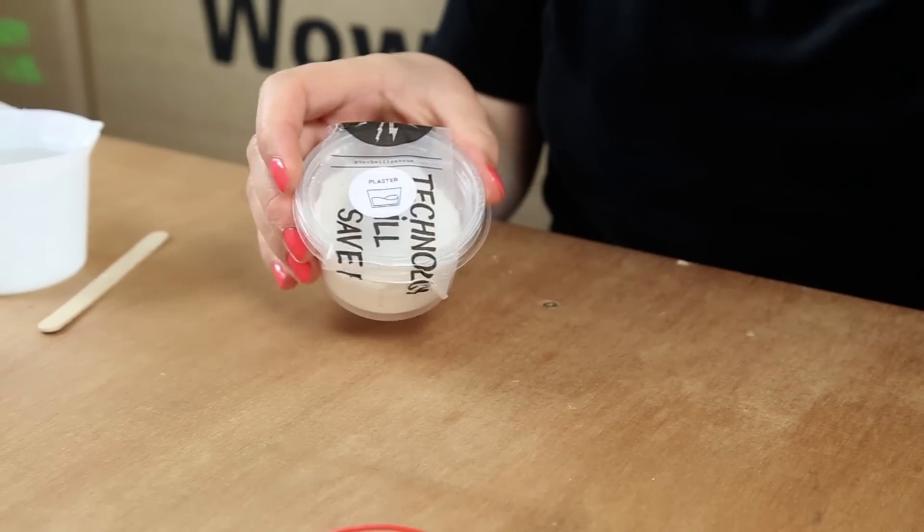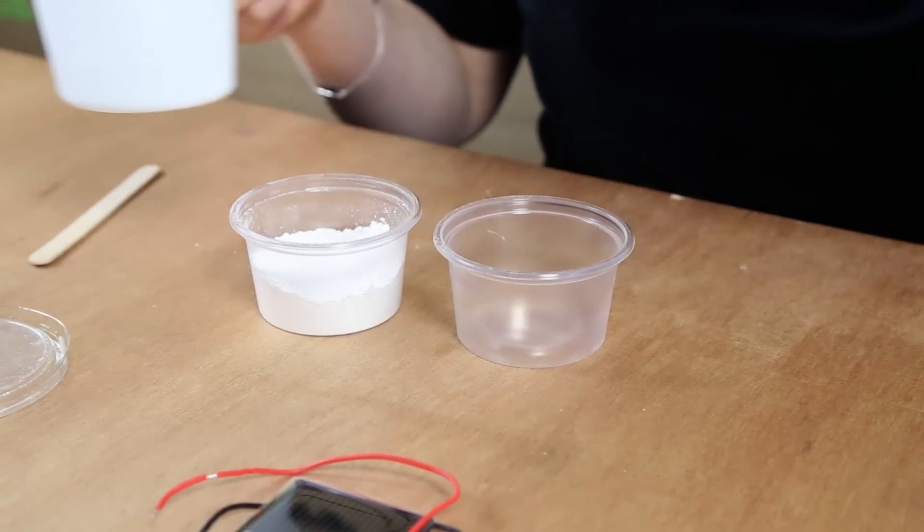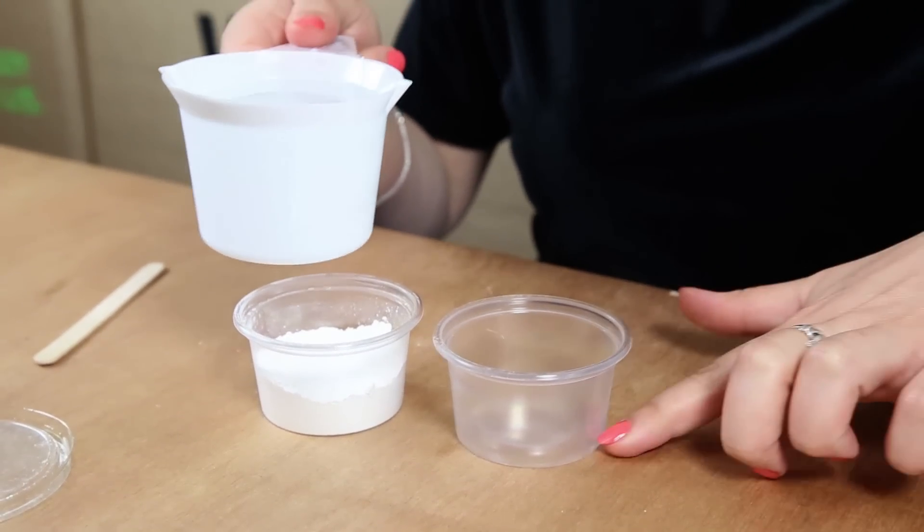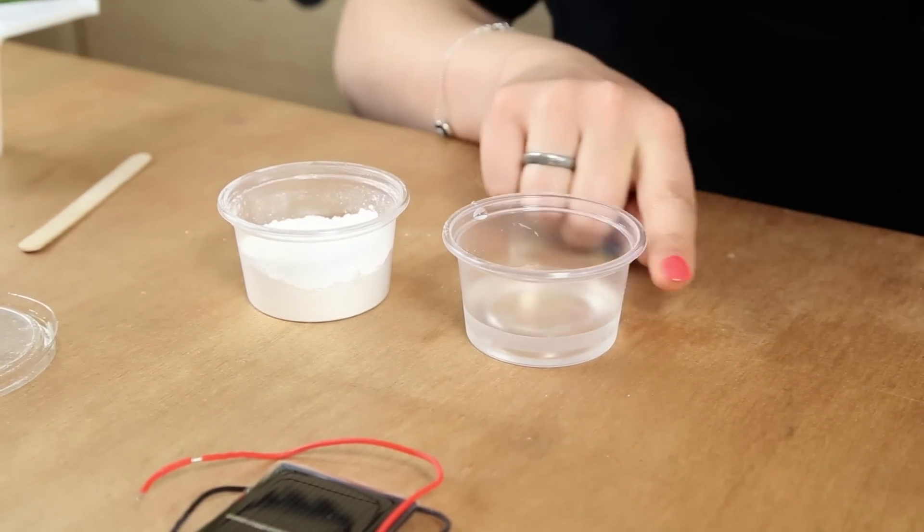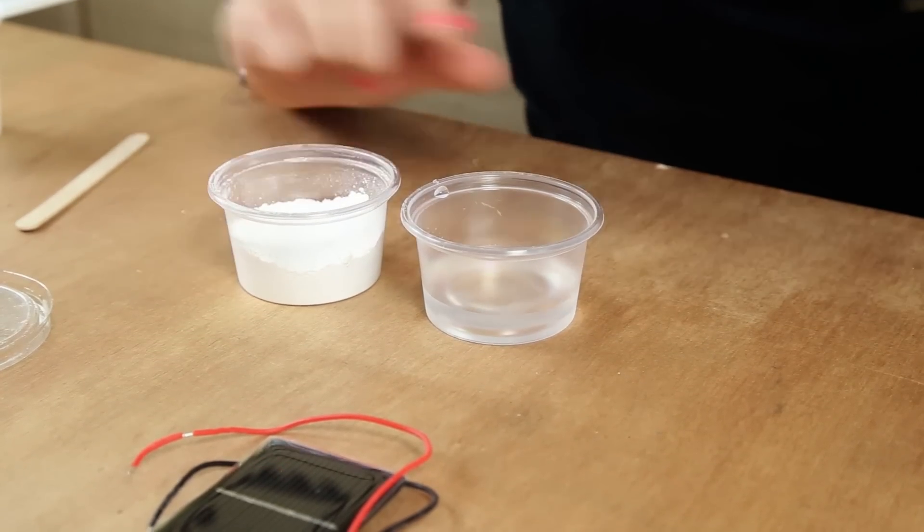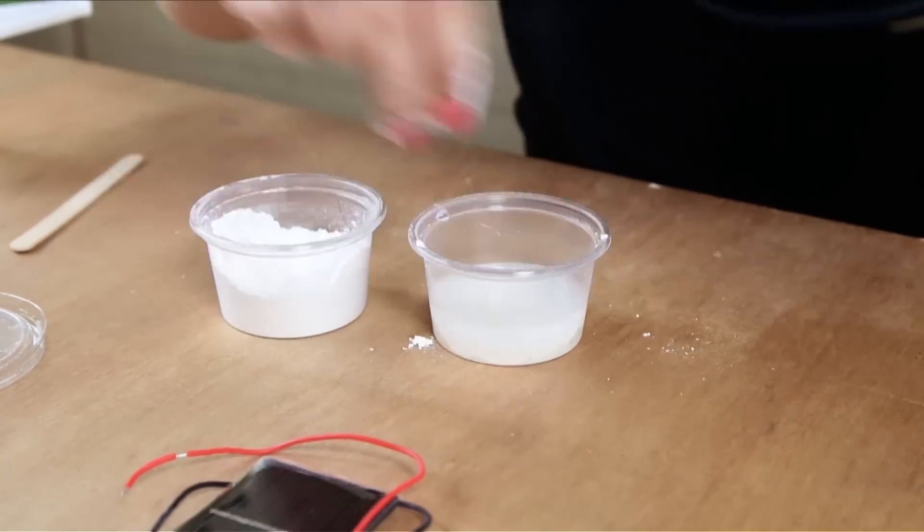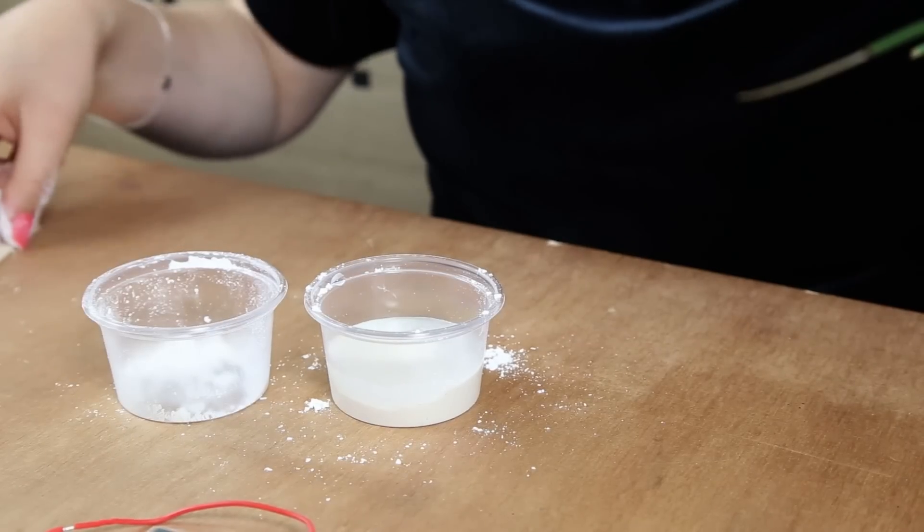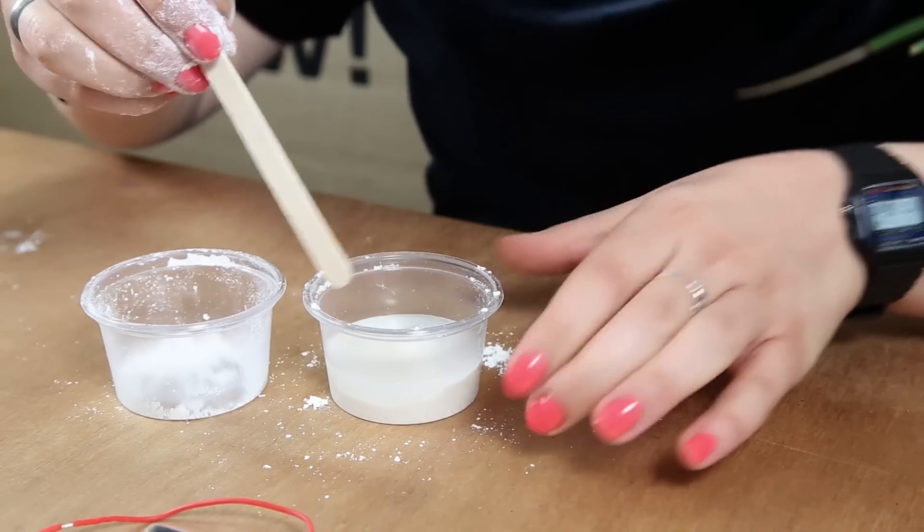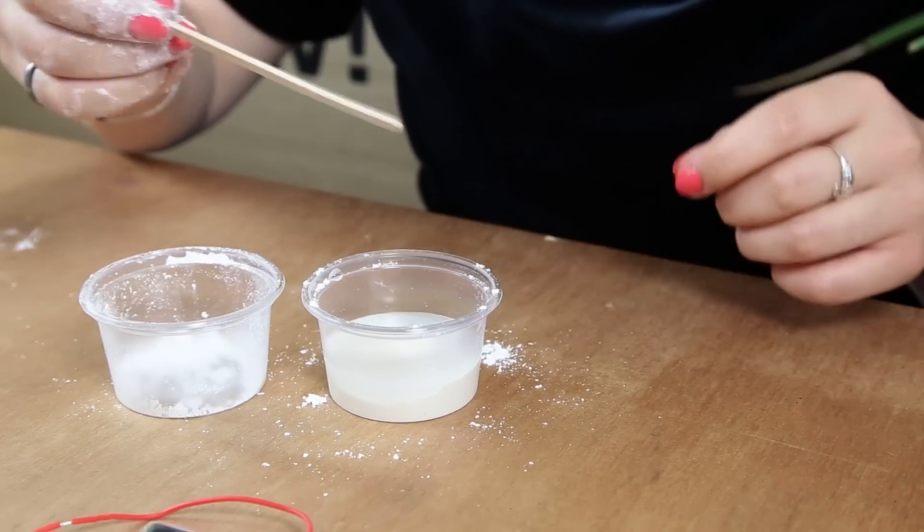So first we're going to take our plaster of Paris. So we want to add some water into it. So we just want to add about a fifth up of the container. And then what you want to do is add little by little the plaster into the water. So then you go in with a little stirring instrument.